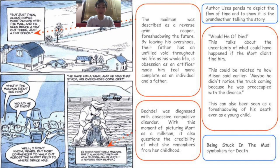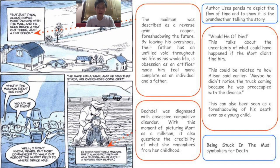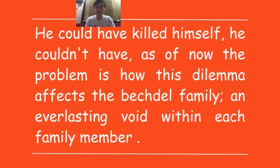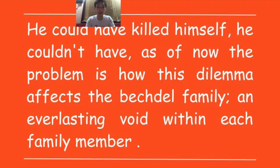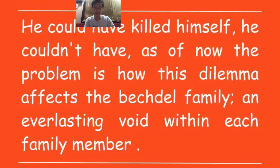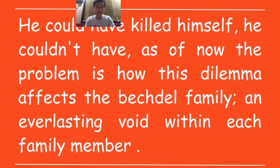Part of this chapter also notes how Alison always pictured Mort as a milkman instead of a mailman. In real life she was diagnosed with obsessive compulsive behavior, which questions the credibility of how she remembers her childhood, since most of the story is told from a first-person perspective. The author effectively uses the panels to depict the flow of time between the memory of the grandmother telling stories and the flashback of her father being stuck in the mud.